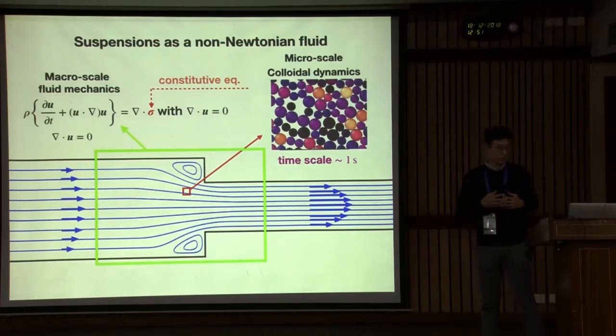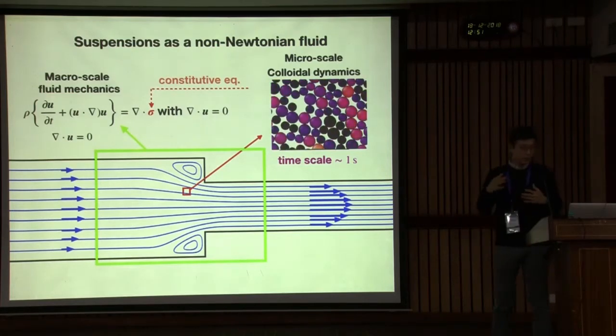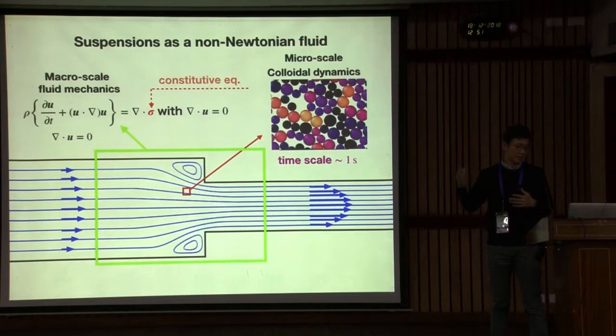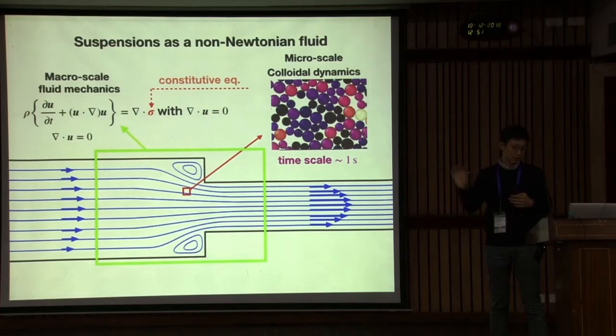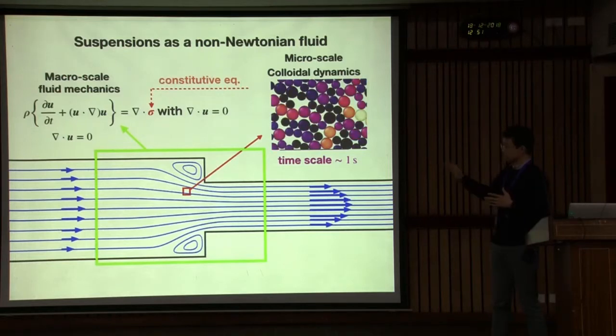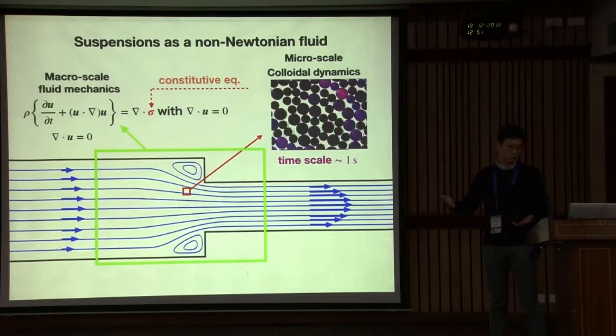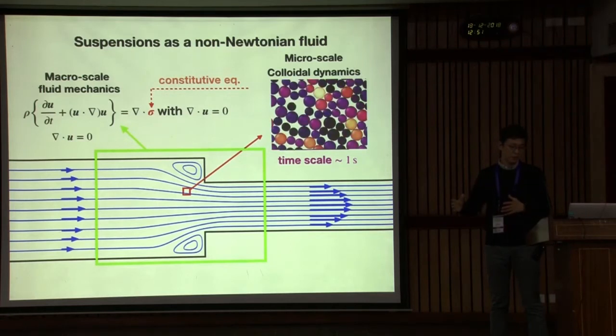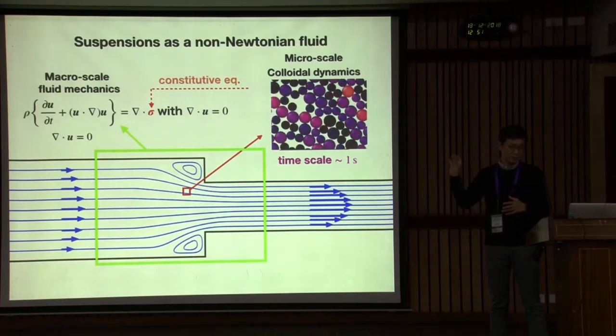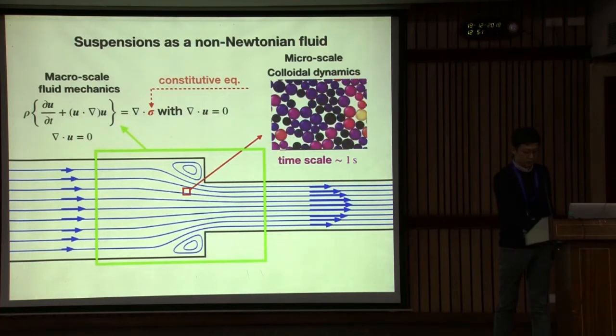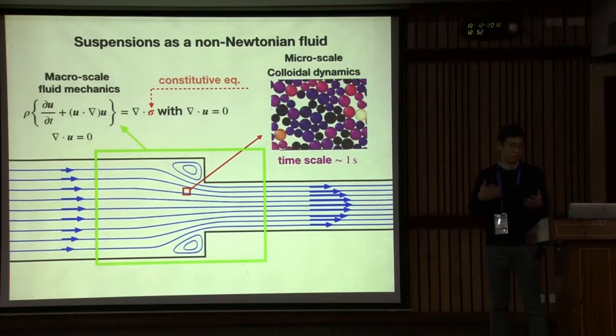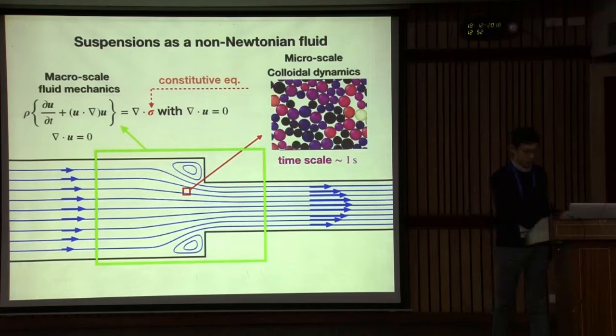If suspension is very dense, we have to consider another aspect. It's too dense, so solid fraction is more than 50%. But of course this may flow, so this should be a part of fluid mechanics, but many things are from solid. This makes things we have to introduce to fluid mechanics.